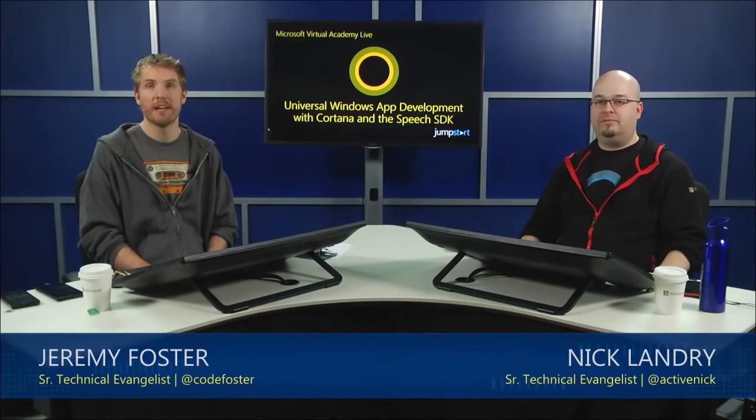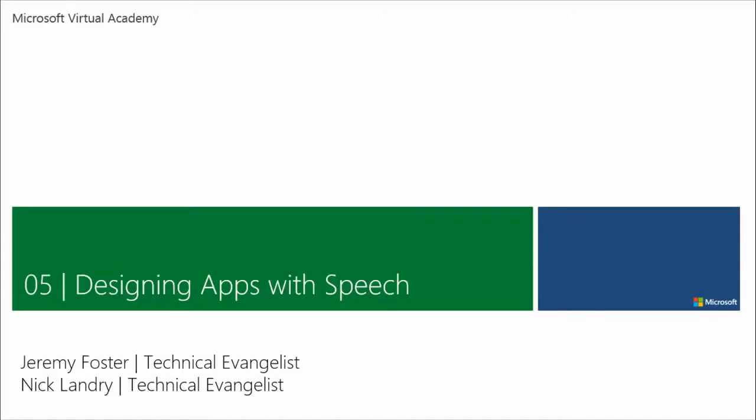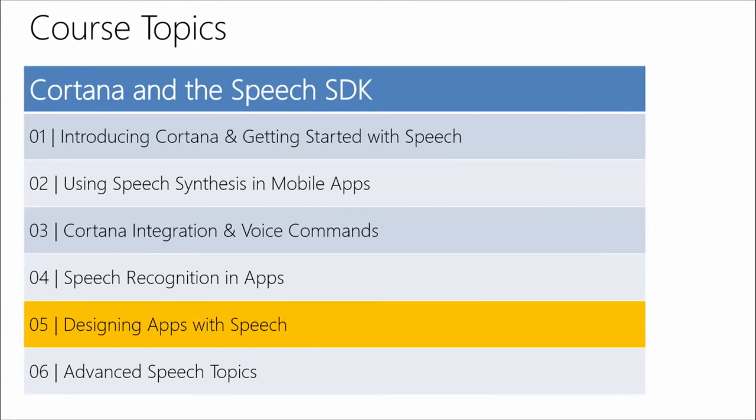Welcome back. This is Module 5 of Developing Universal Apps for Windows using Cortana and the Speech SDK. If you've made it this far, I'm impressed — we've had three very in-depth technical modules, an introduction, and three technical modules. Here in Module 5 it's going to lighten up just a little bit. We're going to be talking about design guidelines — out of the weeds, a higher-level view. You've got all the tools and strategies you need, so now let's look at some general guidelines, because this is not something you want to shove in halfway complete.